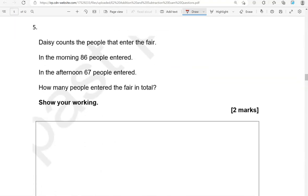Daisy counts the people that enter the fair. So Daisy is actually managing a fair, organizing a fair. In the morning, 86 people entered. In the afternoon, 67 people entered. How many people entered the fair in total? So total, that means adding these two together, morning as well as afternoon. So 86 add 67.